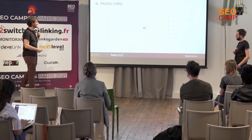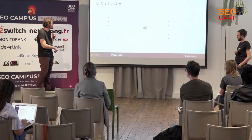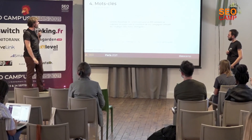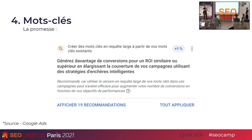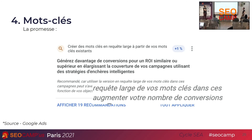On va voir comment il nous soutient dans la création et l'utilisation de listes de mots-clés. Il y a la fameuse version requête large — on parle de type de correspondance. Google met très en avant les requêtes larges en disant que ça permet d'augmenter notre nombre de conversions. Dans les chiffres, beaucoup d'entre nous le savent déjà, les requêtes larges nous permettent de faire plus de visibilité, certes, mais en général les taux de conversion sont beaucoup moindres. C'est à utiliser, mais vraiment avec parcimonie, selon nous.